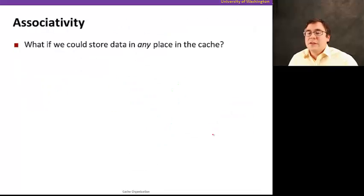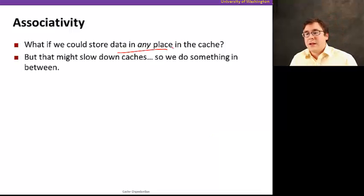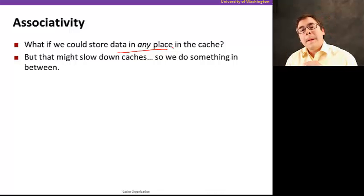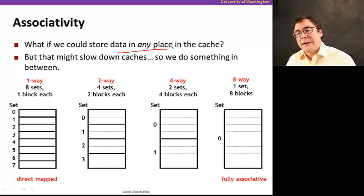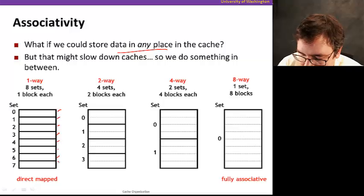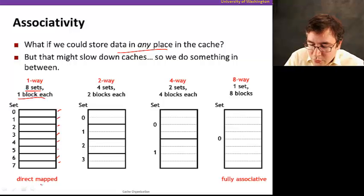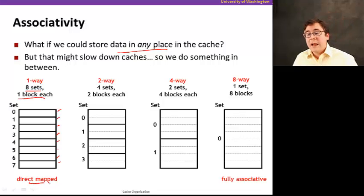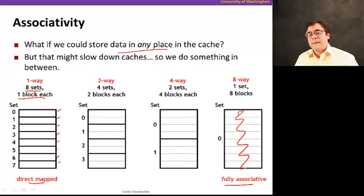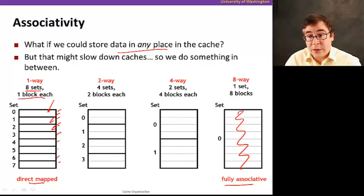The way we solve this problem is using associativity. What if we could store data in any place in the cache? That's possible, but it slows down caches because the circuits get more complicated. On one extreme, a direct mapped cache has 8 sets with 1 block per set — data can only go to one specific place. On the other extreme, fully associative means data can go anywhere in the cache. Since direct mapped suffers from conflicts and fully associative is too expensive, we need something in between.